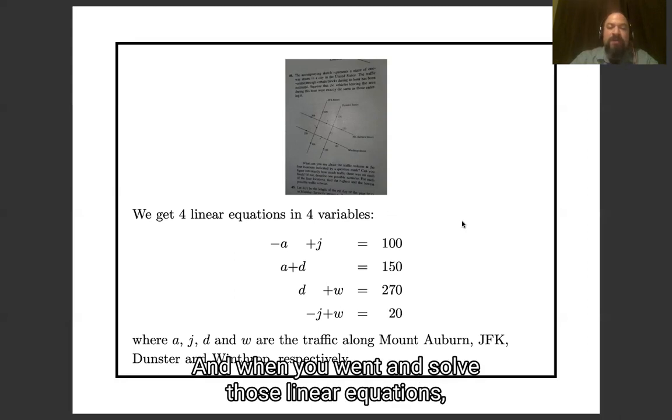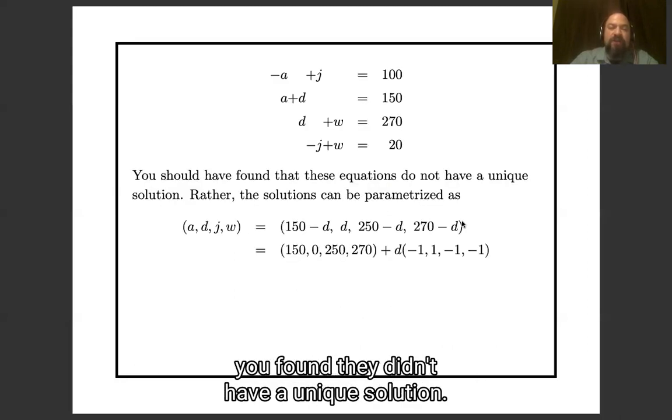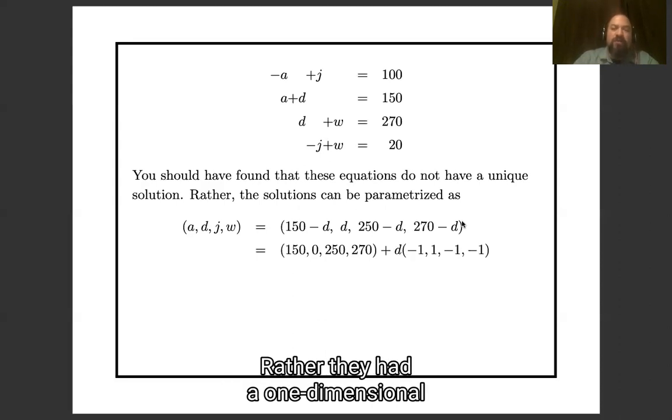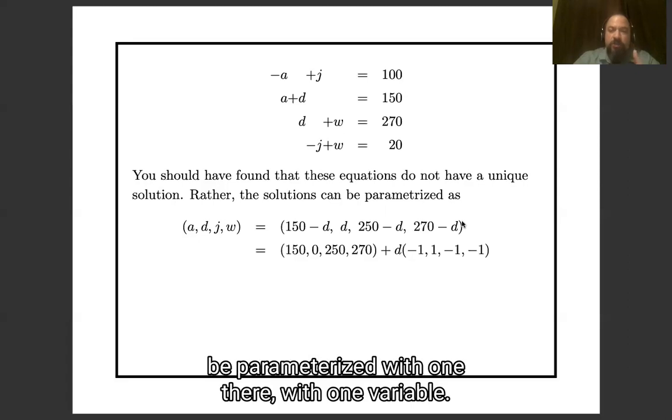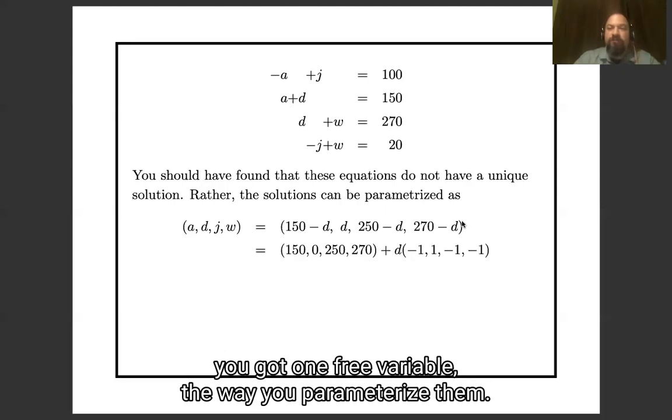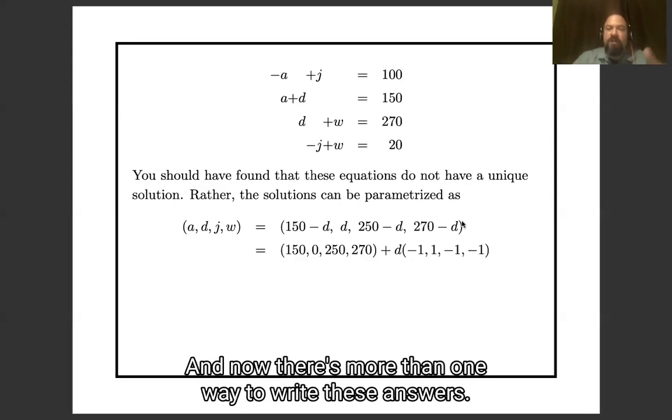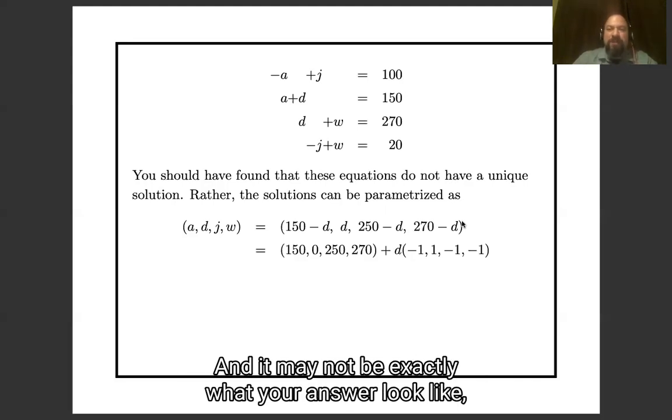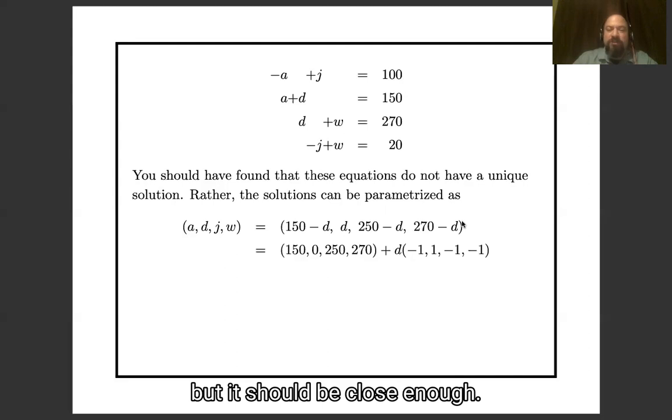And when you solve this problem, you hopefully got a bunch of linear equations that looked like this. And when you went and solved those linear equations, you found they didn't have a unique solution. Rather, they had a one-dimensional family of solutions that could be parametrized with one variable. Because when you did the row reduction, you got one free variable, the way you parametrized them. And there's more than one way to write this answer, so this may not be exactly what your answer looked like, but it should be close enough.